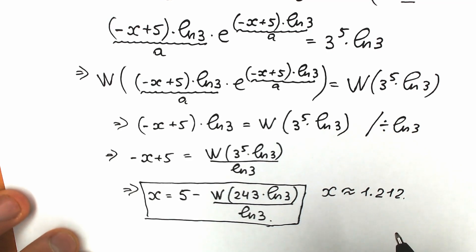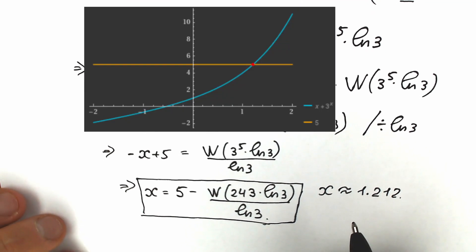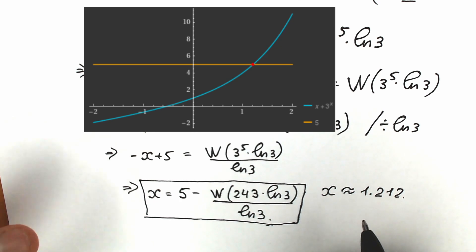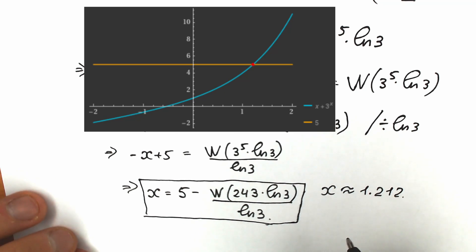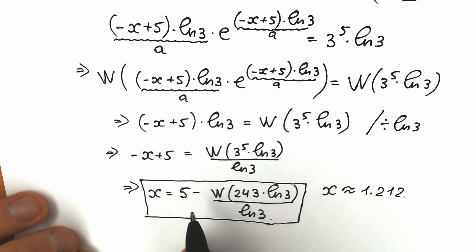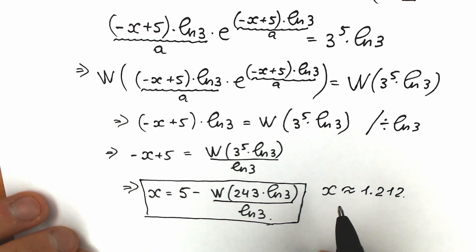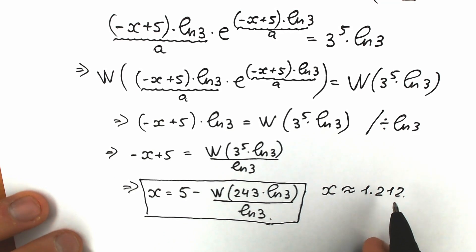Right now you can see a plot — a graph of this challenge — and you can easily see the point of intersection. Basically we have an exponential function and a linear function, so you can easily see this point of intersection. This is our answer; if you're sitting on your exam this is your final answer. If you don't need the complete solution, you can use the approximate answer of 1.212.